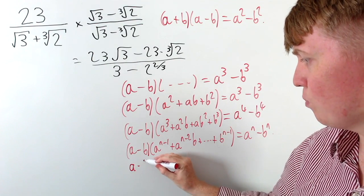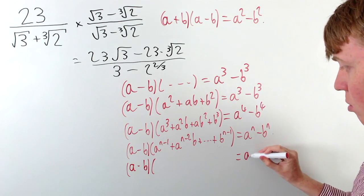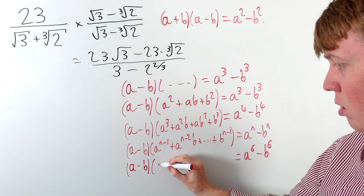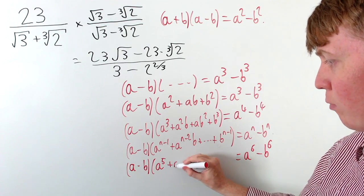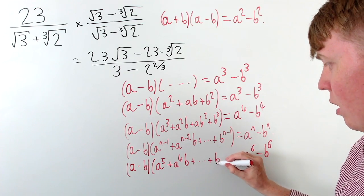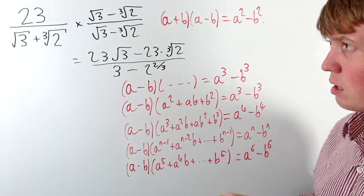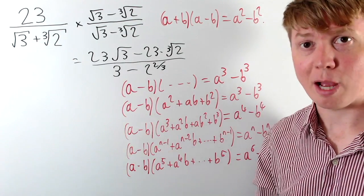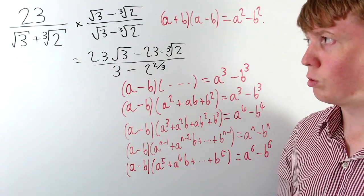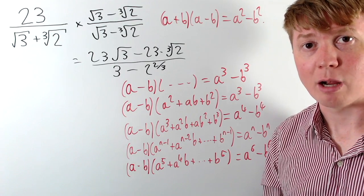With a minus b, applying this formula, this is going to be equivalent to a to the 6 minus b to the 6 — we just need to multiply by a to the 5 plus a to the 4 times b, and so on, all the way up to b to the power of 5. Root 3 raised to the power of 6 is going to be an integer, and similarly the cube root of 2 raised to the power of 6 is going to be an integer.